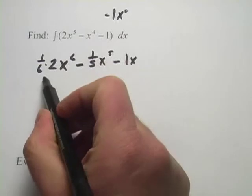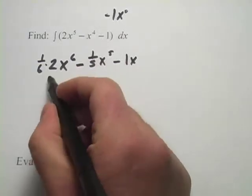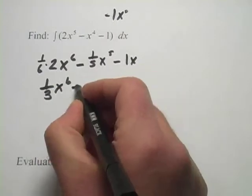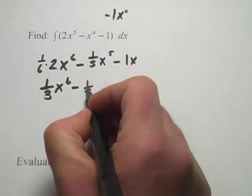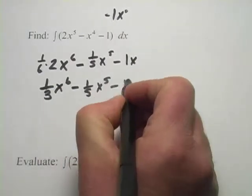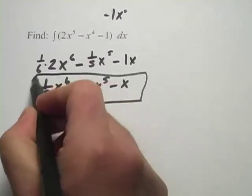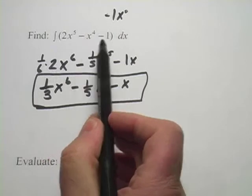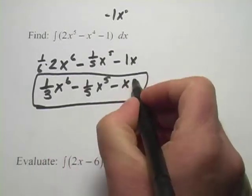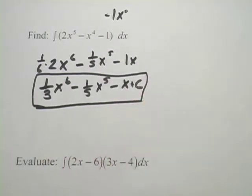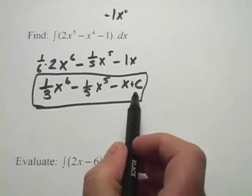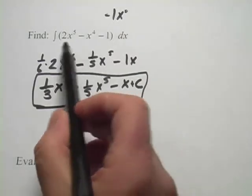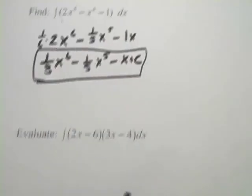Let me simplify a little bit here. So we've got one-third x to the sixth minus one-fifth x to the fifth minus x. And that is the integral of 2x to the fifth minus x to the fourth minus 1, except we need a plus big C, because any constant added onto this function would still give this as its derivative.